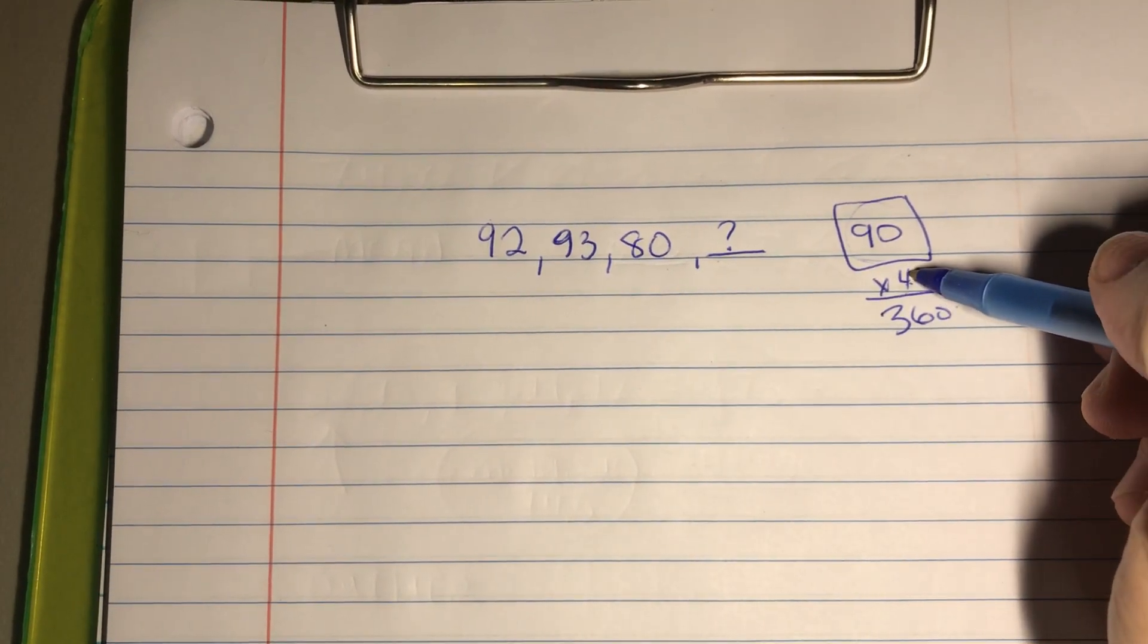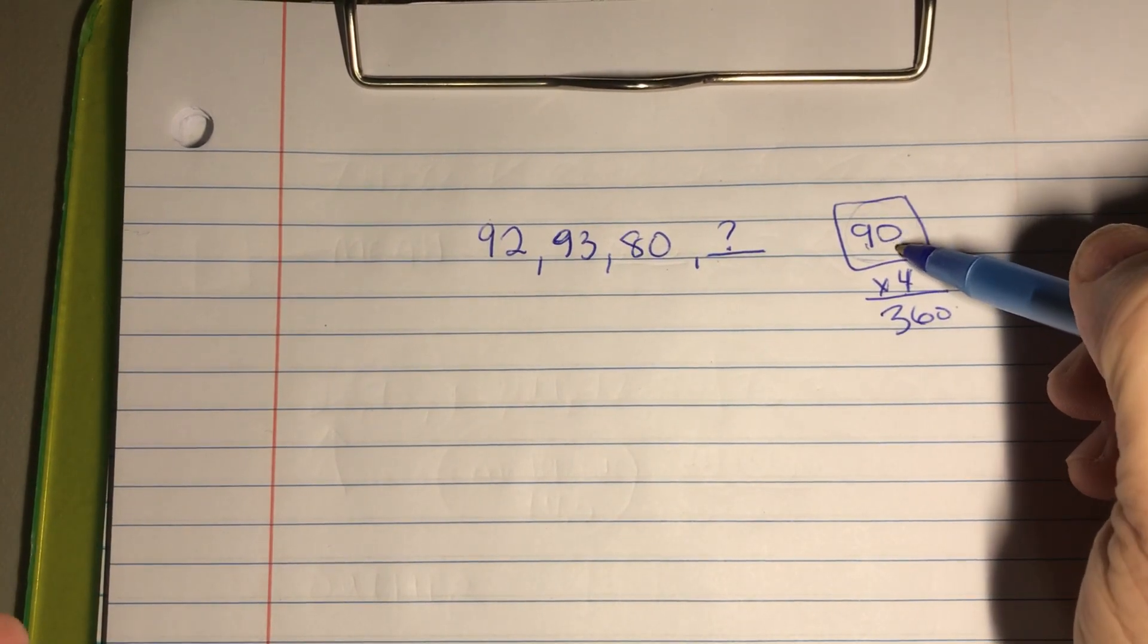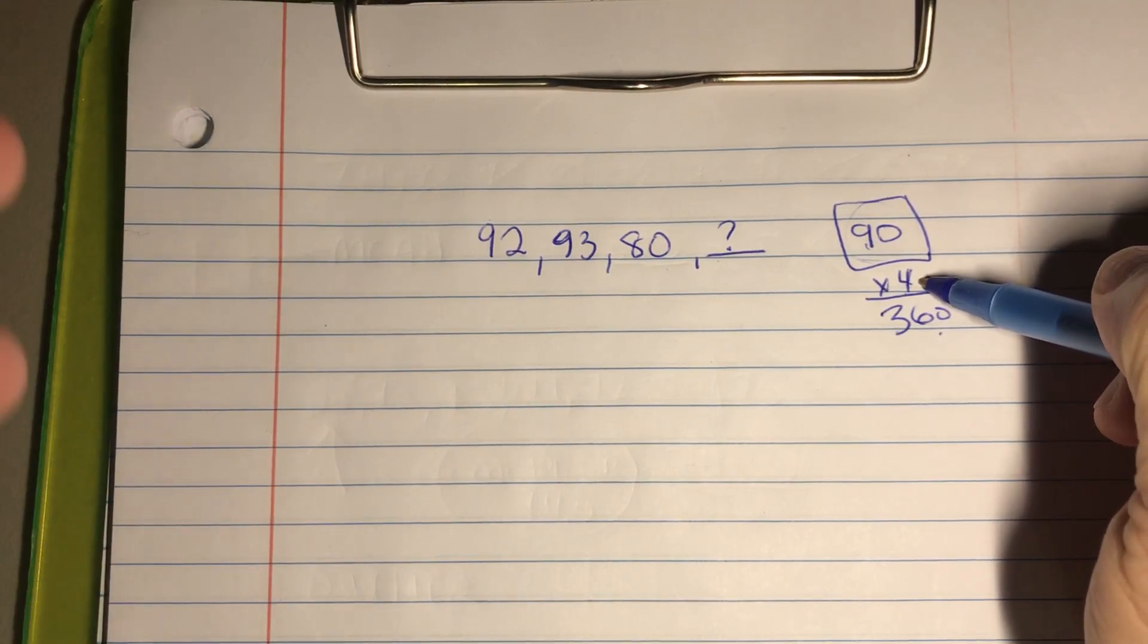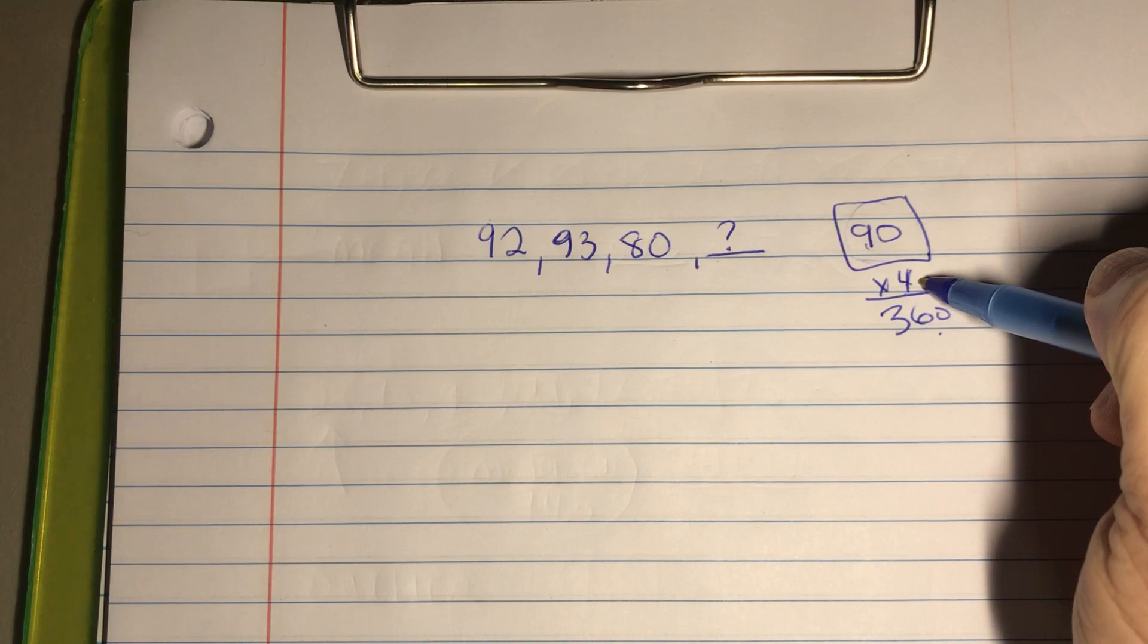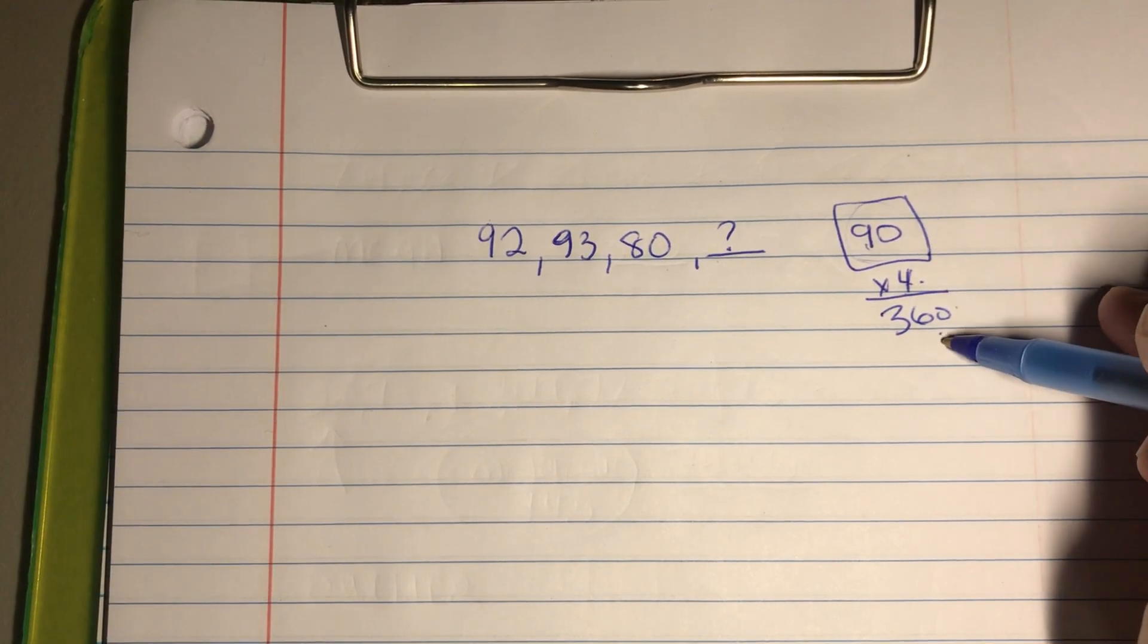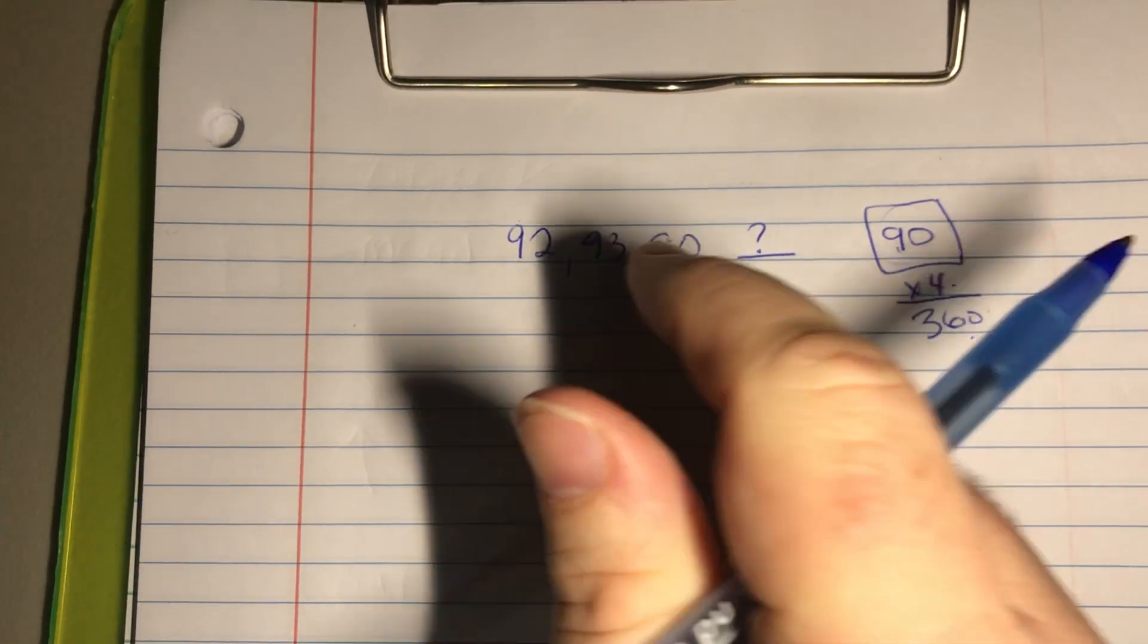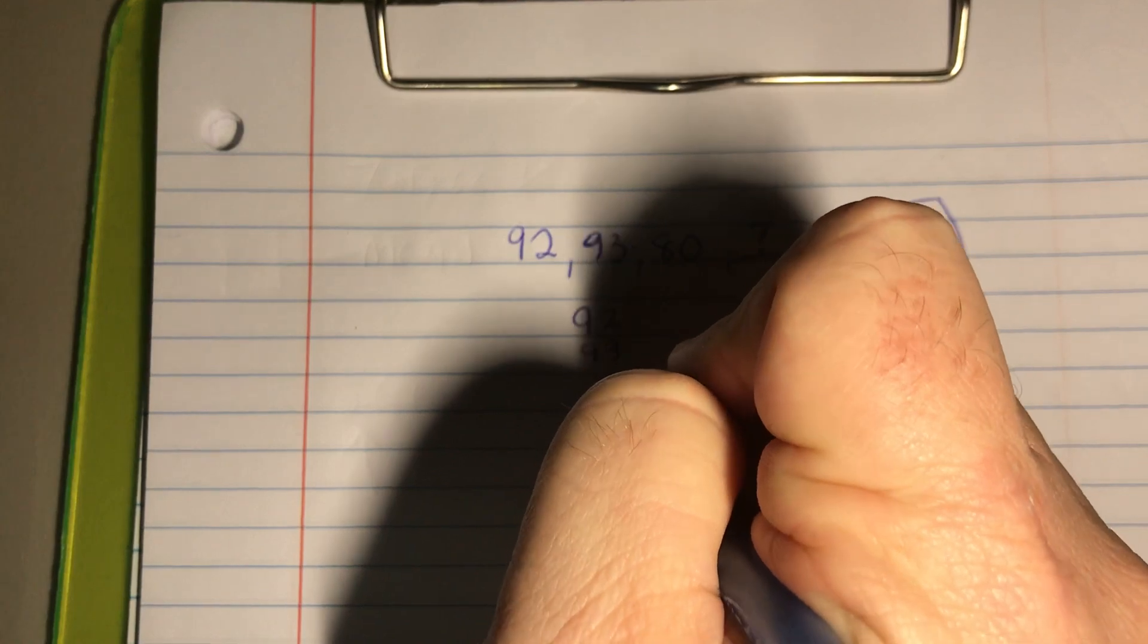There are four tests and I want the average to be 90. Well, the average is when you take the total and divide it by the number of tests or the number of data to get your average. So we're working backwards here. Let's take the other numbers that we actually know and add them. So you have 92 plus 93 plus 80.